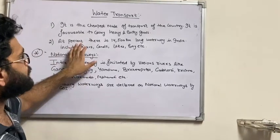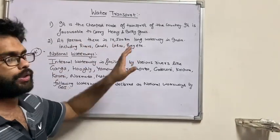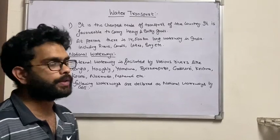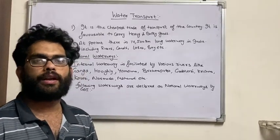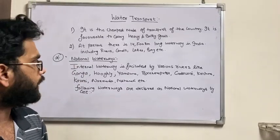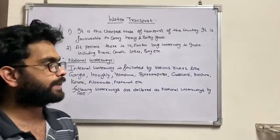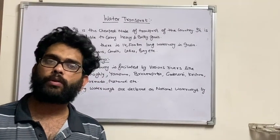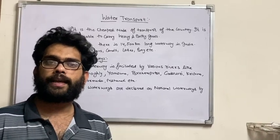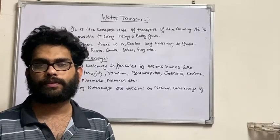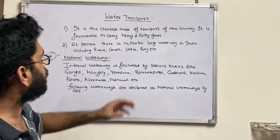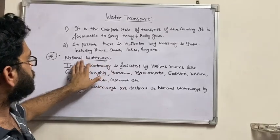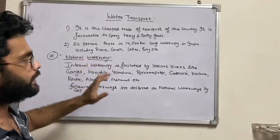At present there is 14,500 kilometer long waterway in India, which includes rivers, canals, lakes, and bays etc. All these water bodies help us for water transport.